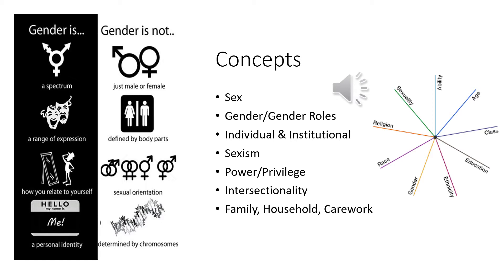Going back to the first, second, and third waves of feminism: the first wave was really about getting women the right to vote. The second wave was more about women's rights. Both movements were really geared towards white women — considered a white women's movement — until the third wave of feminism.